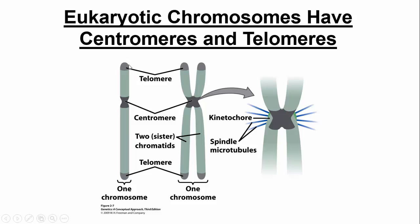I think of telomeres like the little plastic part at the end of your shoelace — they protect the chromosome from fraying and degrading. People think telomeres are associated with aging; as people age, their telomeres start to shorten and get degraded, contributing to aging. Here you see one unduplicated chromosome on the left and one duplicated chromosome on the right, composed of two sister chromatids.